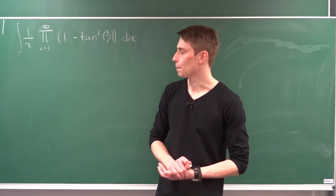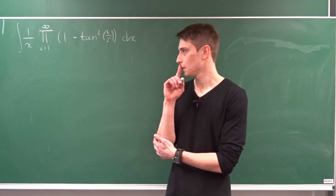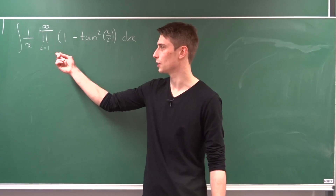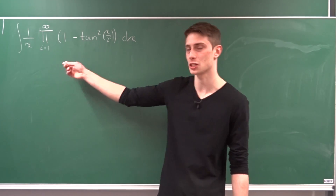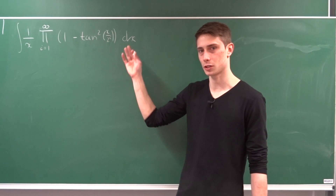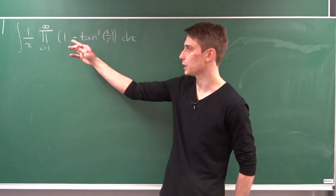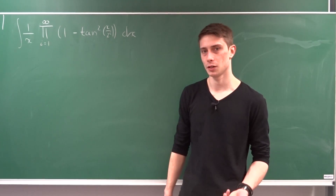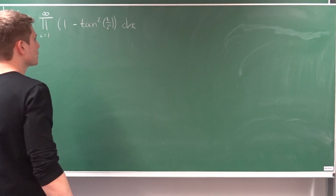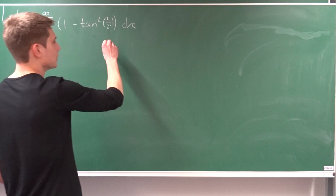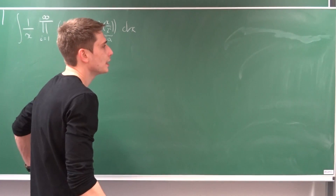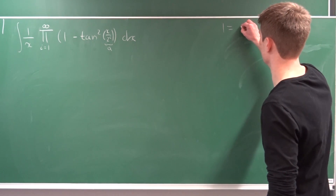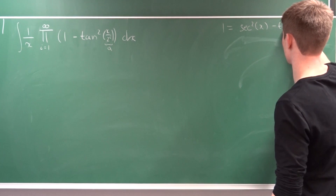Today, what could we do? We've got this subtraction here in this infinite product — that's the pi notation, meaning we are going to take the product of many many terms. So maybe it would be great to express this one minus tangent squared of x over 2 to the i a little bit differently. Let's call this little expression a. Everyone should know the formula: one equals secant squared of x minus tangent squared of x.